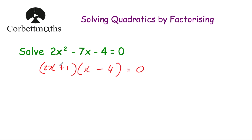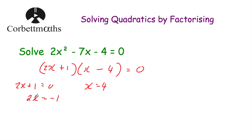Now we want to solve the equation by finding when each bracket equals 0. Starting with (x - 4): x = 4 because 4 - 4 = 0. For (2x + 1), I'll write it as an equation: 2x + 1 = 0. Taking 1 away from both sides gives 2x = -1, and dividing by 2 gives x = -½. So there are two solutions: x = -½ or x = 4.